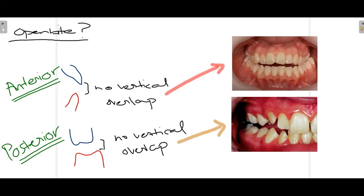OpenBite is when there is no vertical overlap between the teeth. It can be either anterior or posterior. Anterior OpenBite means the anterior teeth have no vertical overlap, as you can see in this picture and diagram. Normally there is some overlap between these teeth. In posterior OpenBite, there is no overlap between the posterior teeth, whereas in normal occlusion they are occluded with vertical overlap.